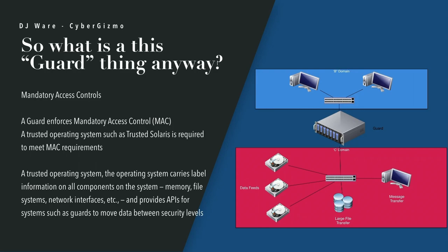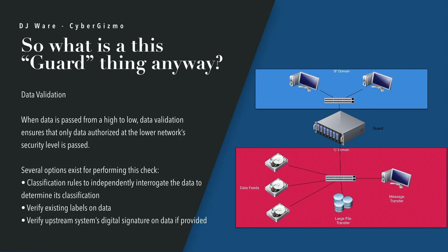If you're looking for all the things we're talking about today, it probably doesn't exist in open source. A trusted operating system carries label information on all components — memory, files, network interfaces — so everything is protected. These are probably some of the most complex pieces of software I have ever encountered. They do provide APIs for systems such as other guards to move data between security levels. Moving data up is trivial in most places; it's moving it down that becomes more work.